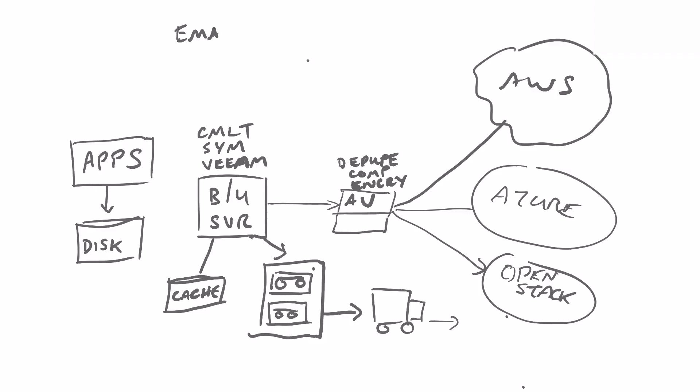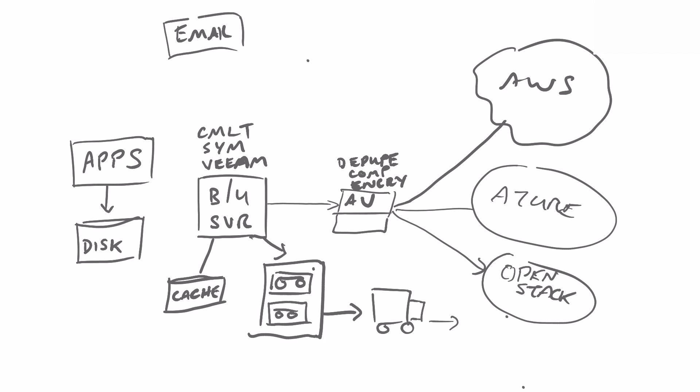Other use cases include archiving, where you have an application such as email and a business requirement to keep a copy of all emails ever sent and received by anyone at any time. That kind of data is rarely read, if ever, so it's a great use case for archiving. You might use software such as Symantec Enterprise Vault, which can archive your emails and send the data to AltaVault running in archive mode.